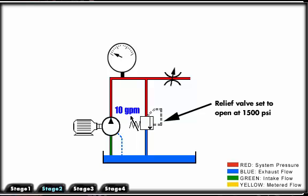As we close the needle valve, pressure increases upstream. As we approach 1500 PSI, the relief valve begins to open, bypassing a portion of fluid to the reservoir.